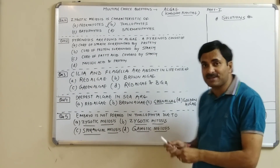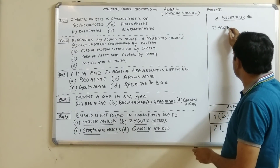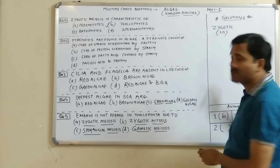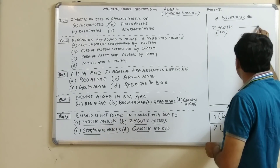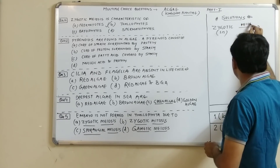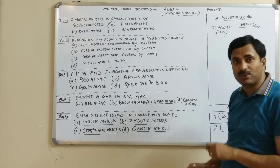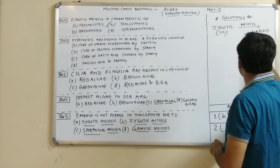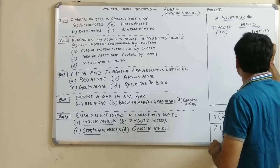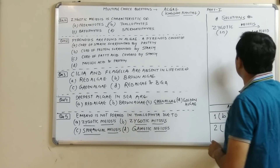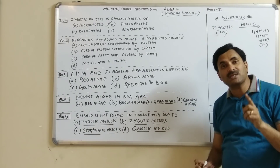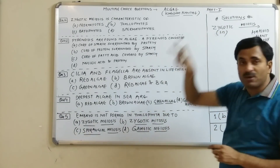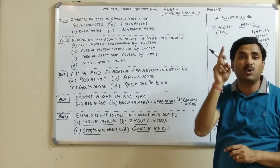The first question is about zygotic meiosis. Zygotic meiosis means that the zygote, which is a diploid structure, undergoes meiosis. When meiotic division occurs in the zygote, a haploid plant body is formed, because meiosis reduces the chromosome number to half.